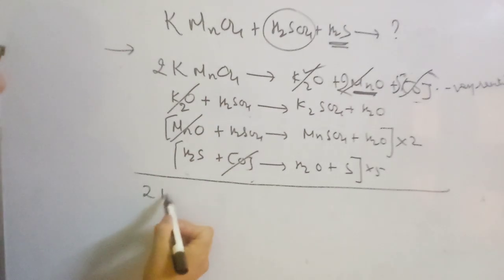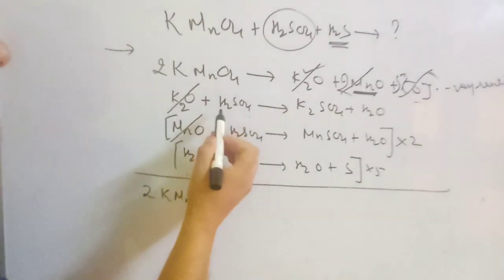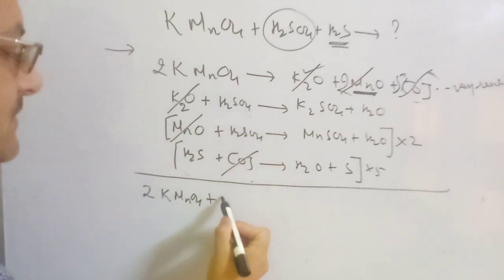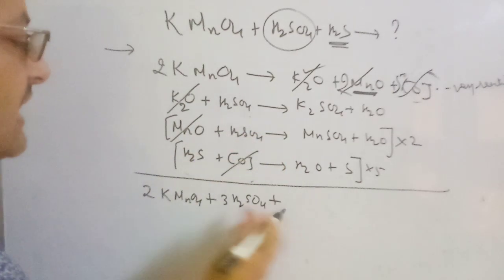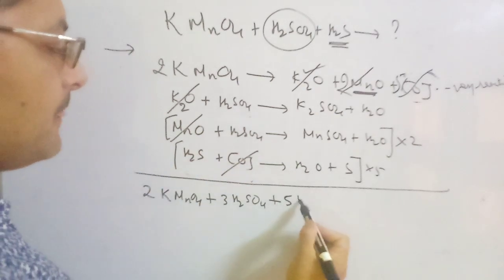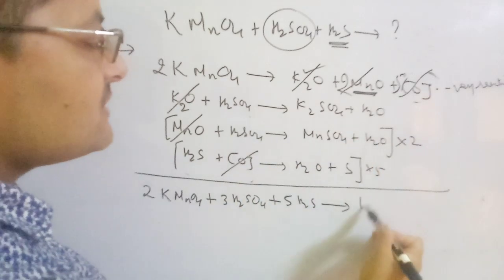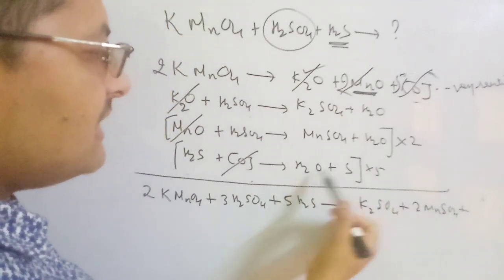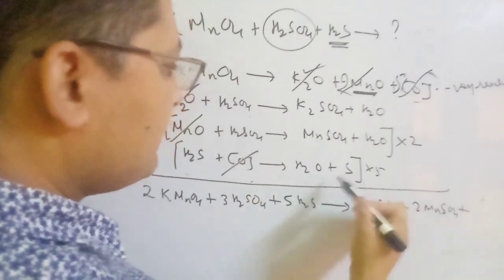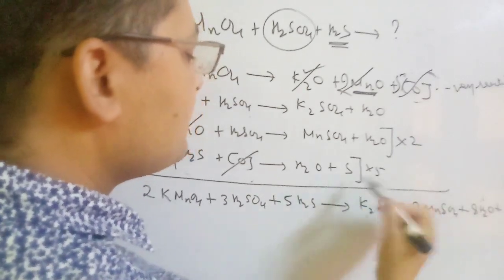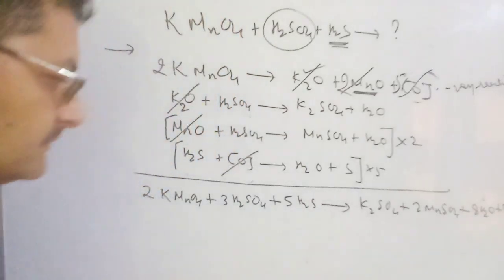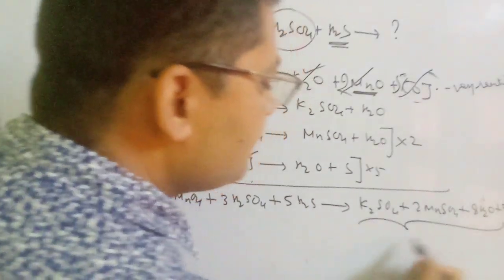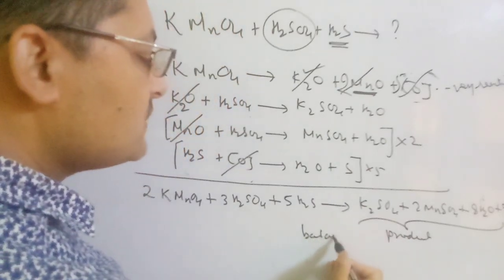After cancelling intermediaries and adding all the partial equations, we get the net total balanced reaction. Left side: 2 KMnO₄ plus 3 H₂SO₄ plus 5 H₂S. Right side: K₂SO₄ plus 2 MnSO₄ plus 5 sulfur plus 8 water. This equation is balanced and the products have been identified. So if you have knowledge of the partial equations method, you can easily predict the products and balance the reaction.